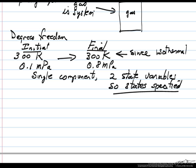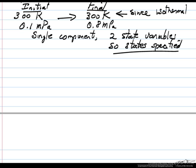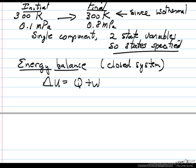What we want to do next then is apply the energy balance to this system. Since it's a closed system, no mass transfer in, no mass transfer out, the energy balance simplifies to delta U equals Q plus W. And because the system is isothermal, delta U is zero. Delta U is CV delta T for an ideal gas, and that's zero.